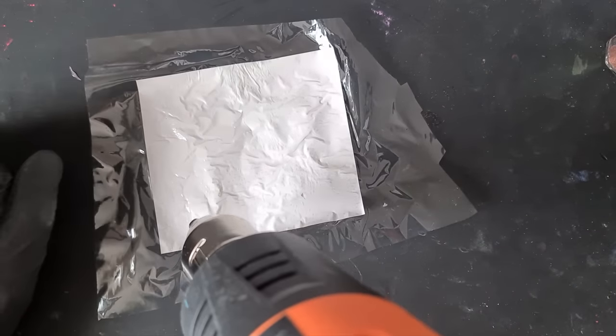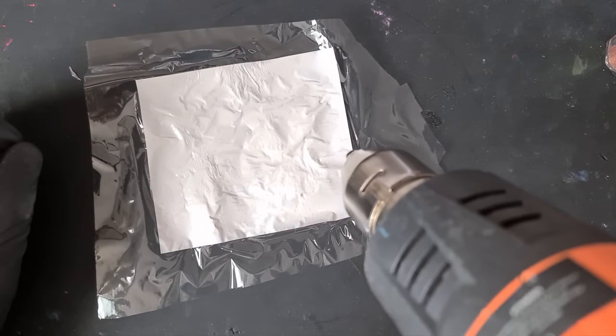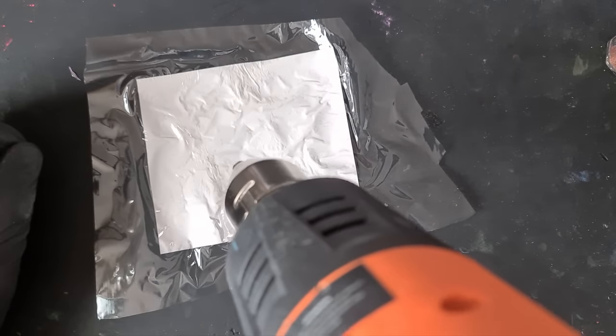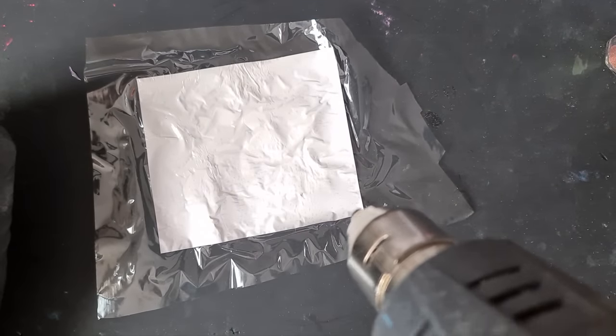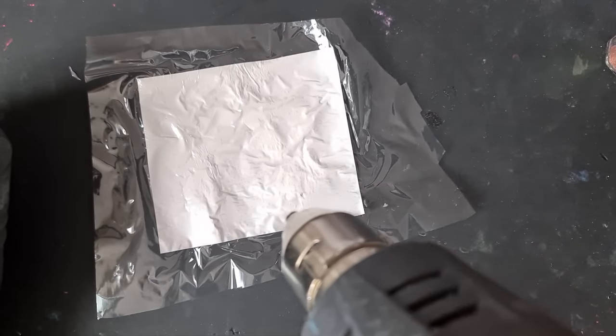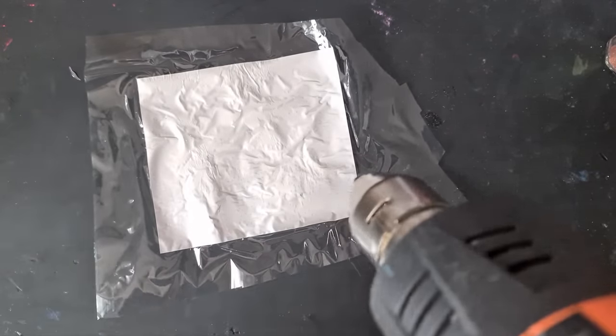I think I'm going to turn it over and do it from the back. It seems to be doing more from the back than what it is from the front. Don't want to melt it. Just going to keep going. Don't want to get too close. I keep getting closer with the heat gun. I'm not really doing what I want it to do, but I'm going to persevere for a couple of minutes.